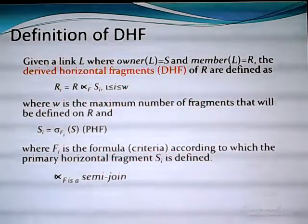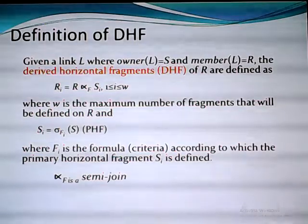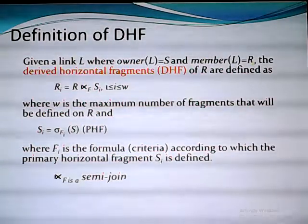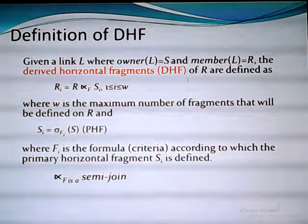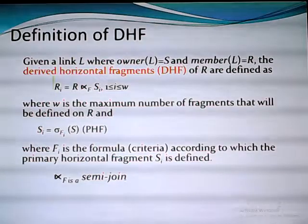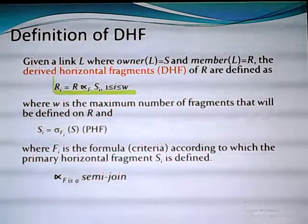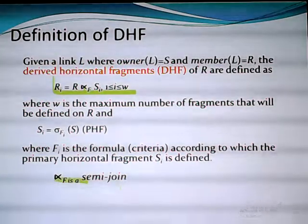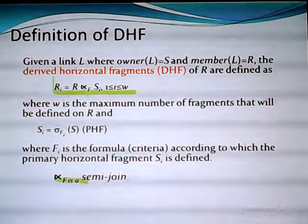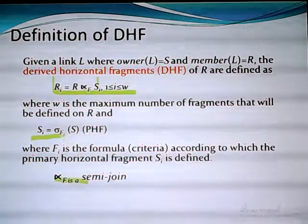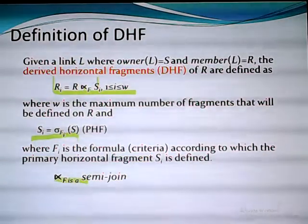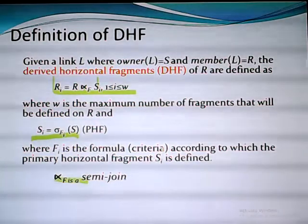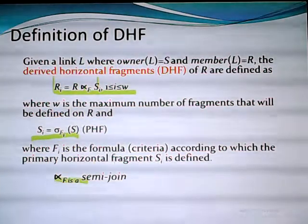Now I go to the definition of derived horizontal fragmentation. Given a link L where the owner of L is a relation S and the member of L is a relation R, I define the DHF of R using this formula. Note that this is a semi-join. SI is a selection from S, and as you know, SI will be a primary horizontal fragmentation. Fi is the formula — meaning the criteria according to which the PHF SI is defined.